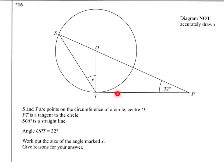First of all, as we've got a tangent, we can mark in the angle here as 90 degrees because it's a tangent. And if that's 90, then the angle up here is going to be 58, because these two angles add up to 90. They're called complementary angles.